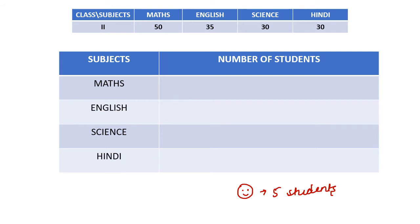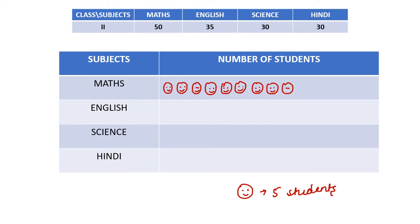For Maths, we have 50 students, which means we have to make 10 such symbols. So draw 10 symbols: 1, 2, 3, 4, 5, 6, 7, 8, 9 and 10.